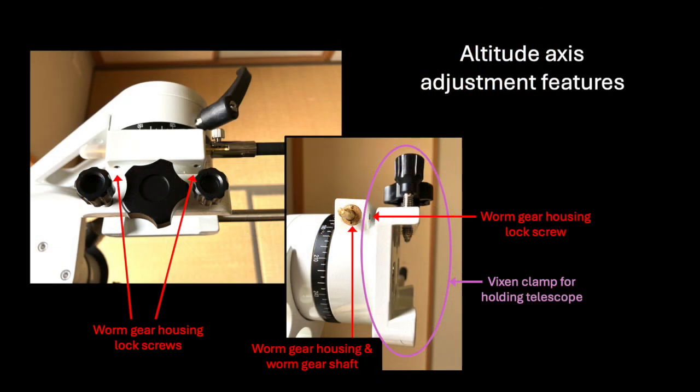I suspect, but have not verified, that the internal construction of the altitude axis of the SV-225 mount is exactly the same. It makes sense. It certainly has the same external adjustment features as you can see here. So, if you have issues with that other axis, just follow the same procedure described here to reset it to factory new performance.